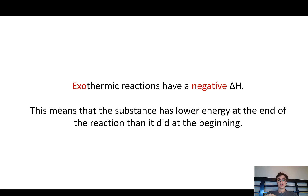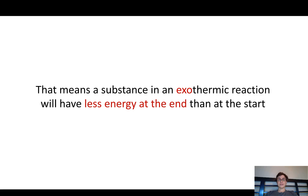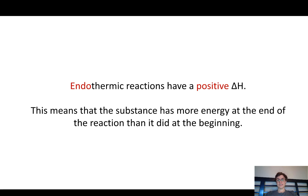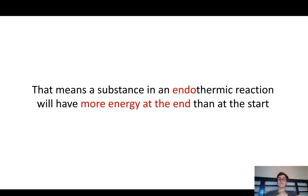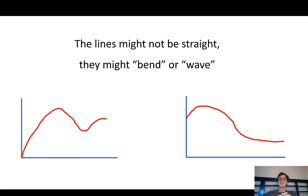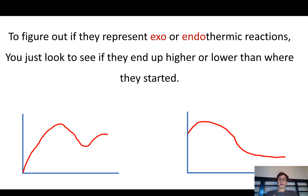Exothermic reactions have a negative change of enthalpy, so the chemicals have lower energy at the end than at the beginning. In an exothermic reaction, the chemical is losing energy as the process goes. Endothermic reactions have a positive delta H, meaning the substance has more energy at the end than at the beginning because it's gaining energy. The lines on the diagram might not be exactly straight — they might be a little wavy. To figure out if a line represents an endo- or exothermic reaction, you just look to see if it ends up higher or lower than where it started — just the beginning and the end.